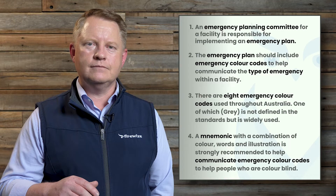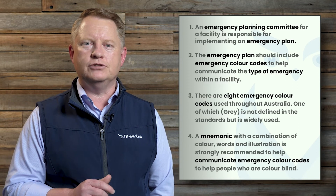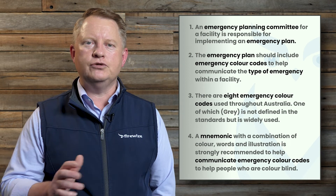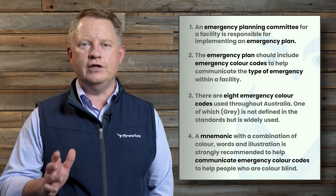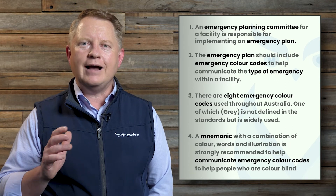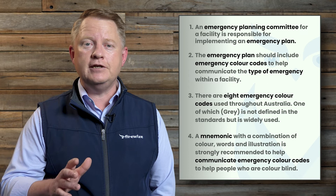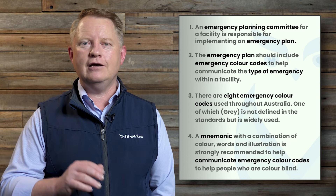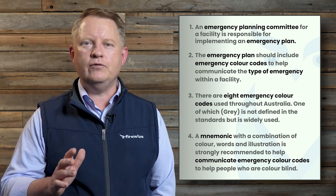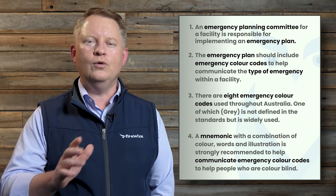So let's wrap things up and summarise what we've learned. An emergency planning committee for a facility is responsible for implementing an emergency plan. The emergency plan should indicate emergency colour codes to help communicate the type of emergency within a facility. There are eight emergency colour codes used throughout Australia, one of which — grey — is not defined in the standards but is widely used. A mnemonic with a combination of colour, words and illustrations is strongly recommended to help communicate emergency colour codes to people who are colour blind.